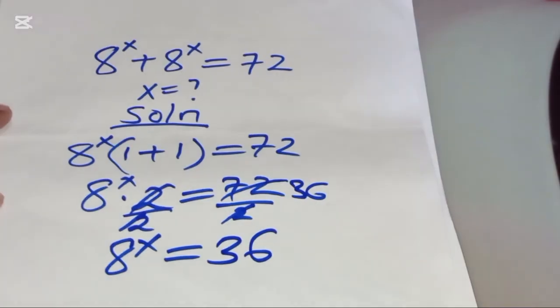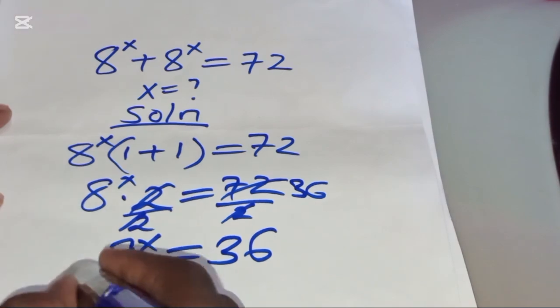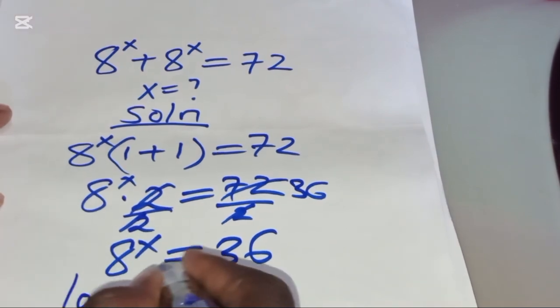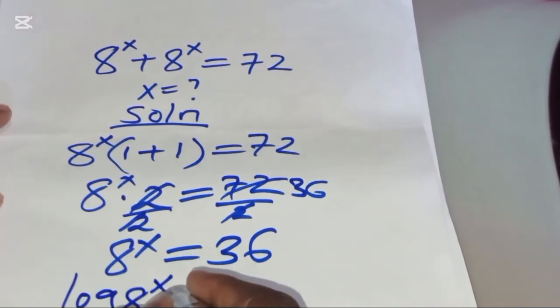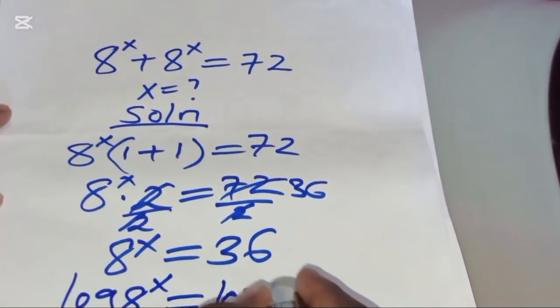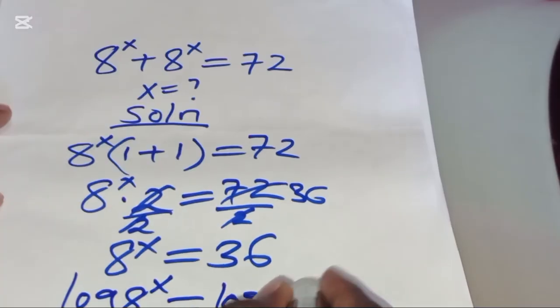Now to solve for the value of x, we introduce the natural logarithm on both sides as follows: log of 8 to the power x is equal to log 36.